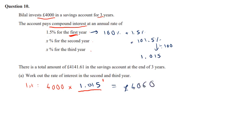Now, let's take the next bit. So then it gets paid x% for the next two years. So to work out how much money there is in the account at the end of the third year, we would do 4,060 times by my multiplier, which I don't know yet.